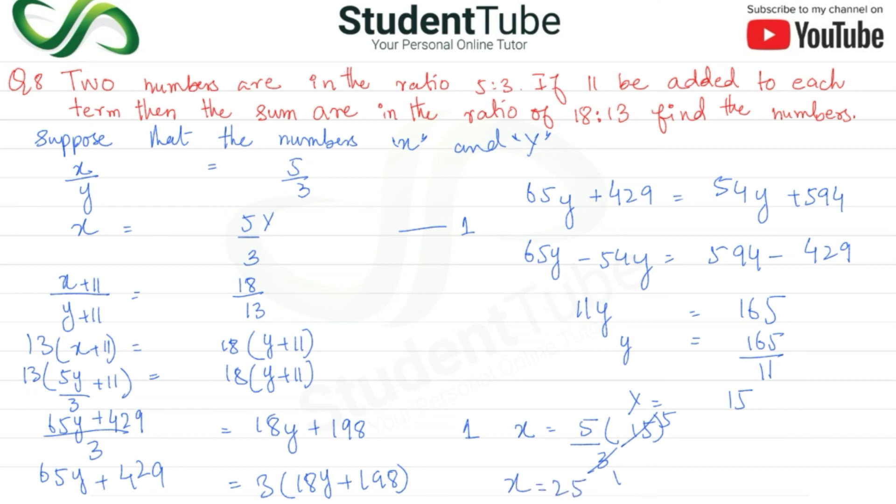So, वो दो numbers कौन से हैं? 15. Y का जो आया 15 और x आया 25. Answer.